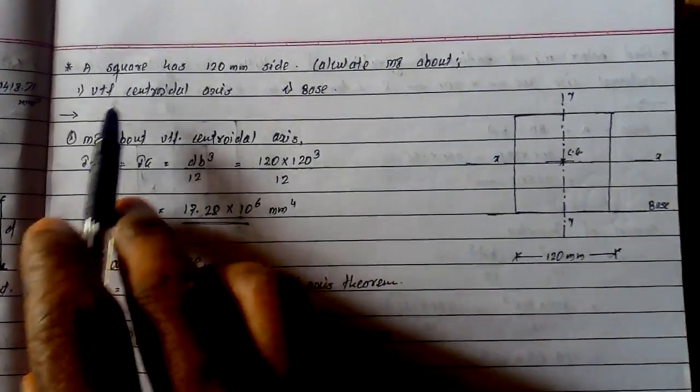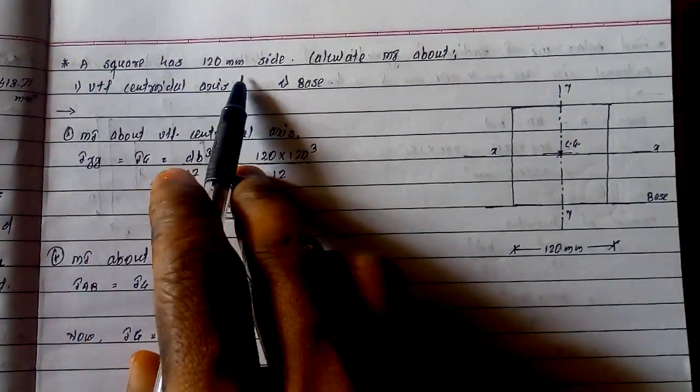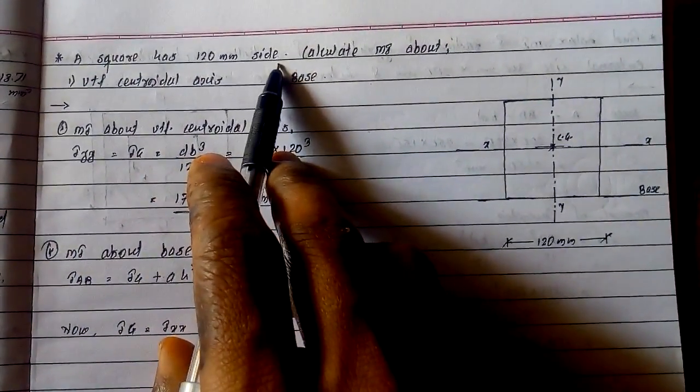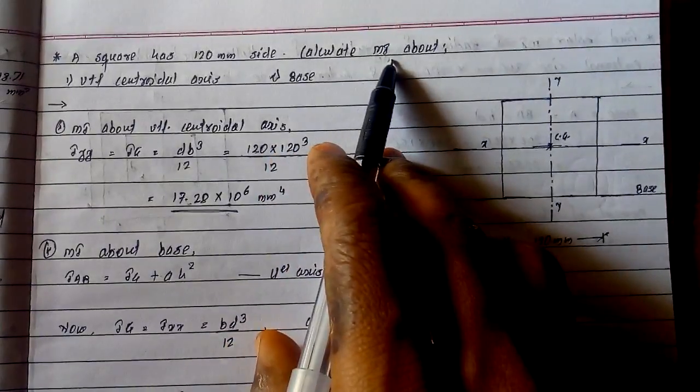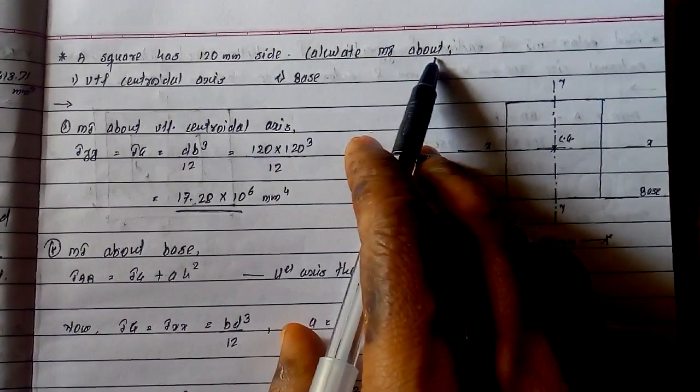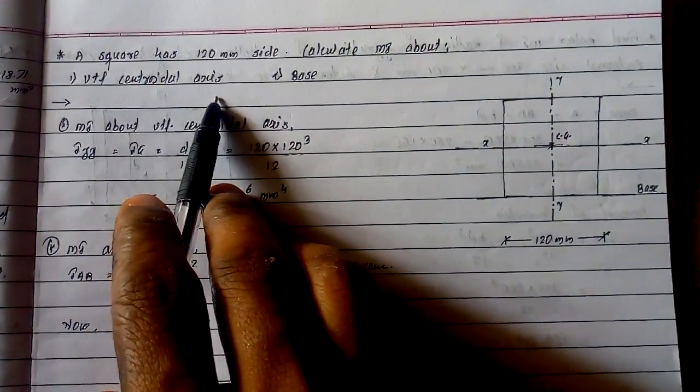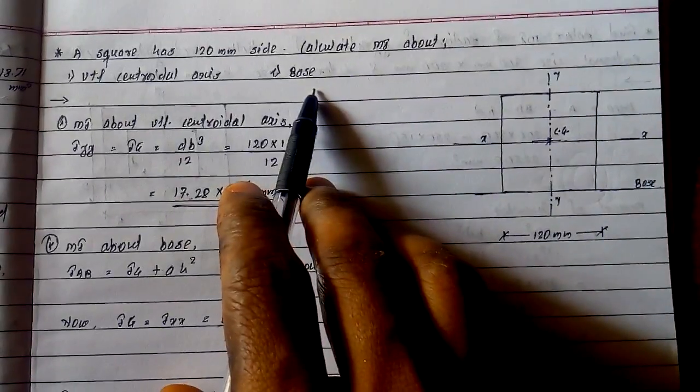The question is: a square has 120mm side, calculate moment of inertia about number one, vertical centroidal axis, and number two, base.